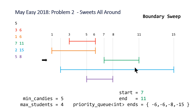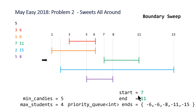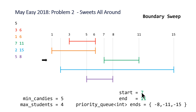Finally, the green student has a range of 7 to 11, so we push 11 into the priority queue. Now step two triggers: the top value 6 is less than the start 7, so we pop off the two sixes. This leaves 3 students, meaning with 7 candies the teacher satisfies the purple, blue, and green students. We check: is the size 3 greater than max students 4? It's not, so we don't reset anything. Our final answer is 5 candies to satisfy a maximum of 4 students, and we output those two numbers.